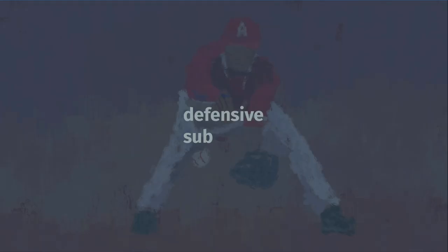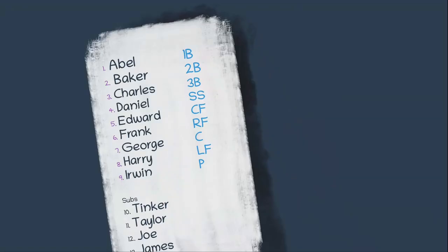Scenario two: Baker is in the field playing second base when he breaks his ankle. At this point, obviously we'll need a substitution for him, but as he is in the defensive state, bringing in Taylor to take his spot at second base is referred to as a defensive substitution. In effect though, it basically has the same outcome as in the first situation — Taylor plays in Baker's position, and he would hit in his spot in the batting order. Defensive substitutions are most often made at the beginning of the half inning, but obviously with injuries, they could happen at any point.